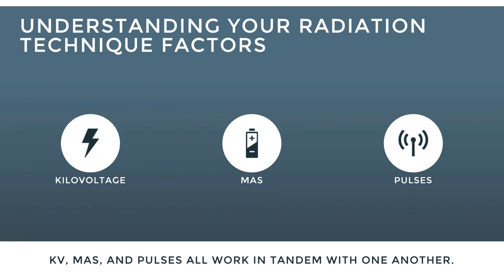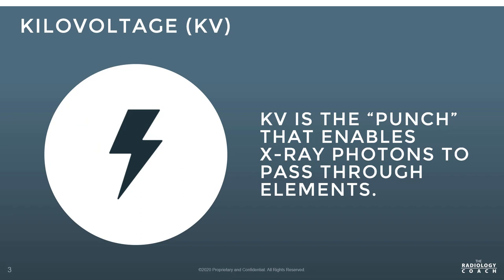First, I want to discuss understanding your radiation technique factors. There are three factors you'll typically see on your x-ray generators. You'll see KV or kilovoltage — those units mounted on a wall outside the podiatry x-ray room or mounted on an arm rail on your x-ray unit. It's the unit that has the buttons or keypads and the exposure switch. You'll also see mAs or pulses.